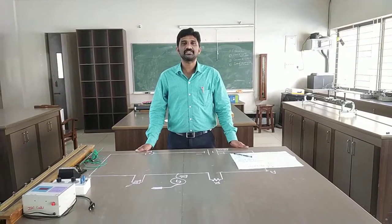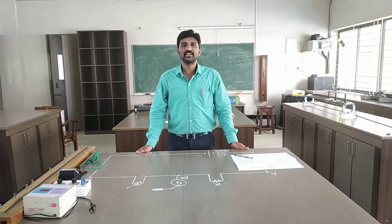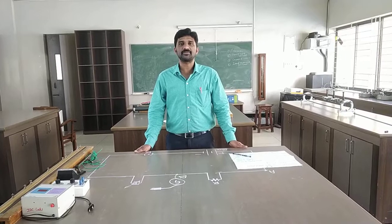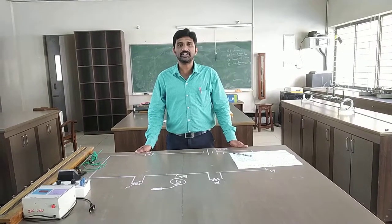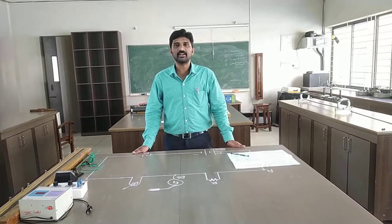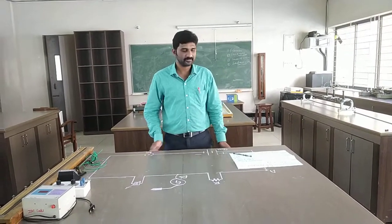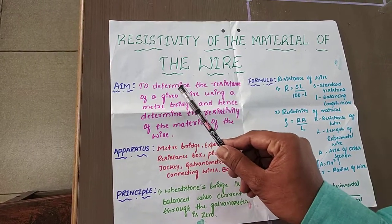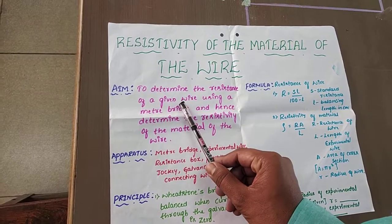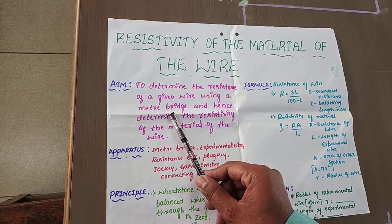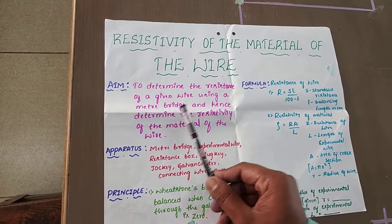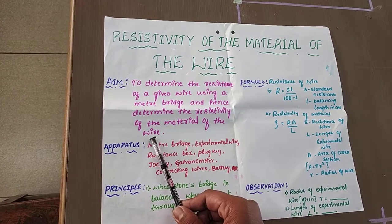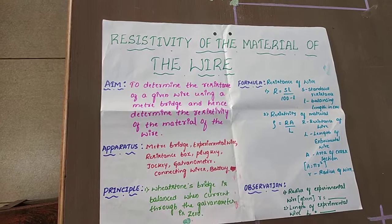Dear students, today I am going to demonstrate one of the experiments in class 12 physics, that is resistivity of material of wire. The aim of the experiment is to determine the resistance of the given wire using a meter bridge and hence determine the resistivity of the material of the wire.